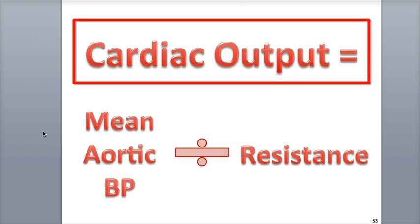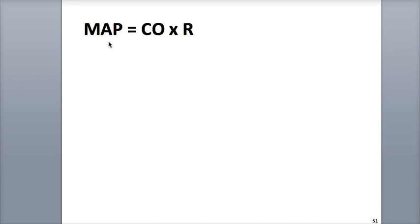We can also use mean arterial pressure to calculate cardiac output. We can divide mean arterial pressure by resistance to generate cardiac output. We can also rearrange the terms: mean arterial pressure equals cardiac output multiplied by resistance. This means that if resistance is stable, mean arterial pressure will increase if cardiac output increases and will decrease if cardiac output decreases.